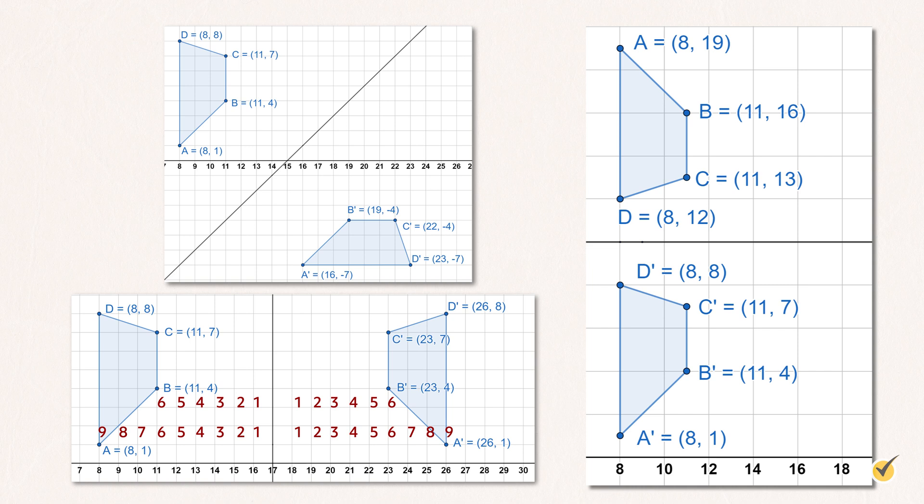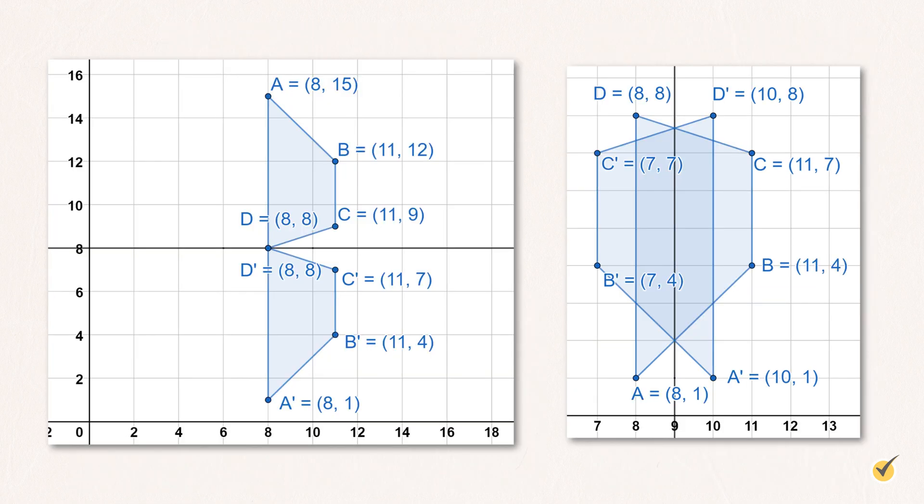Now, here's a trapezoid being reflected over three different lines. Notice how the three properties we just discussed hold true, but also notice how, to actually create a reflection, it often involves simply counting the distances between the line of reflection and the points, or adding and subtracting coordinates. In some cases, the line of reflection may be on the edge, or even inside, the figure.